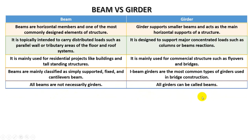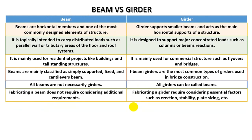As mentioned previously, beams and girders are almost the same in work procedure but have some differences. Fabricating a beam does not require considering additional requirements, whereas fabricating a girder requires considering essential factors such as erection, stability, and plate sizing.